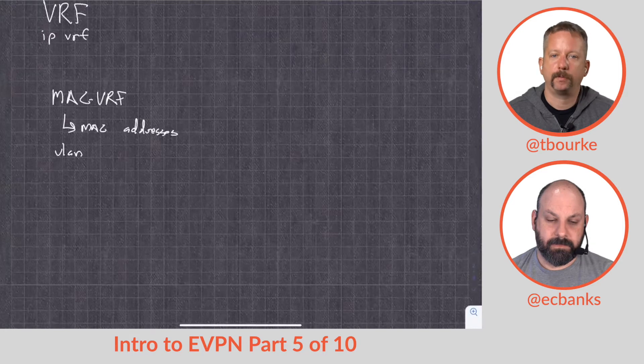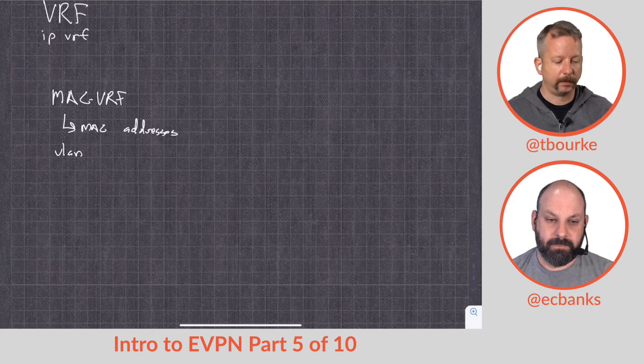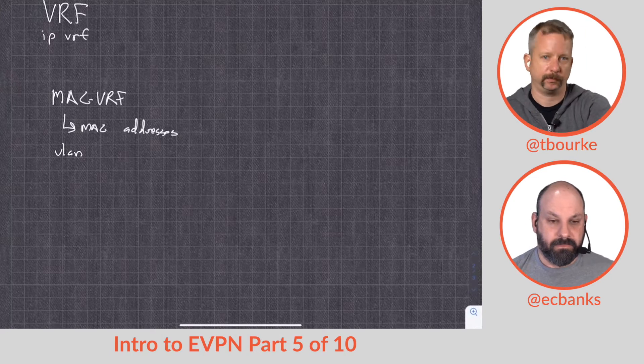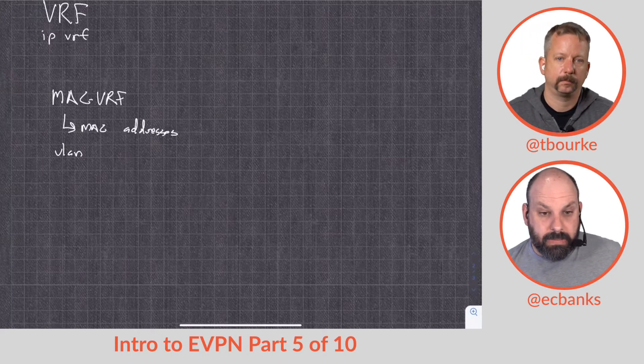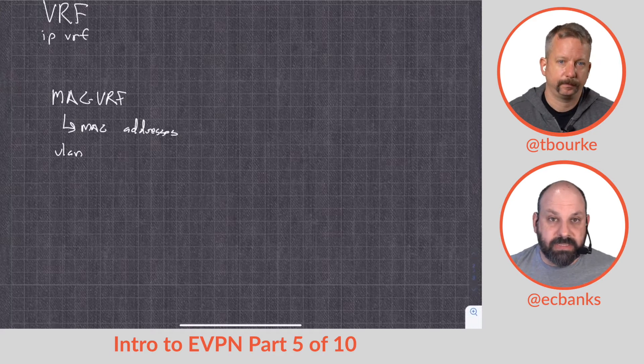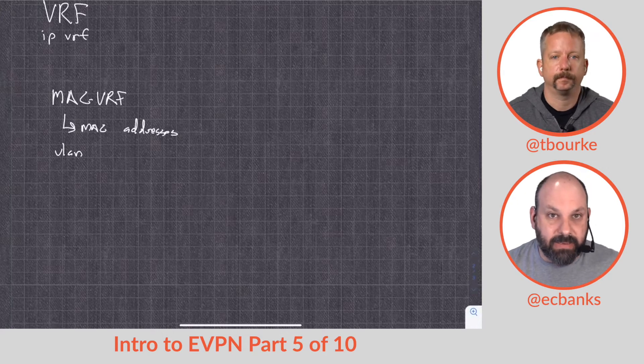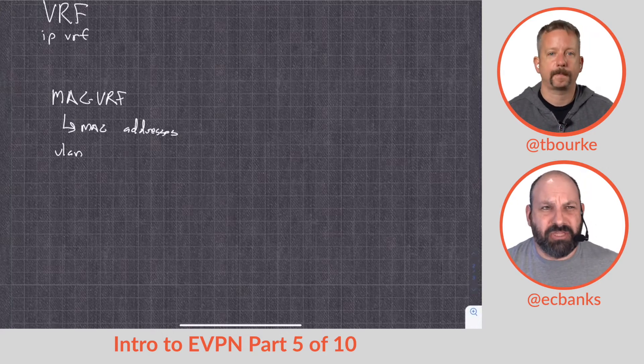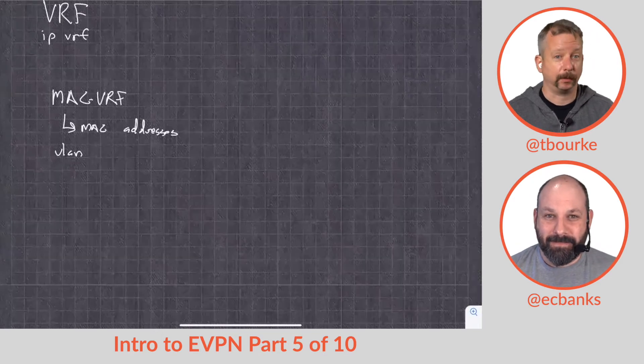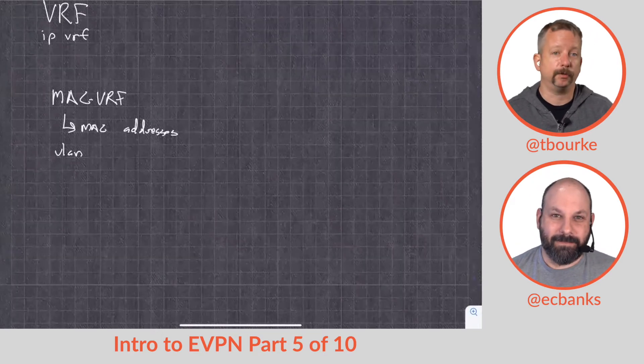How does layer 2 typically, how does one switch learn about the MAC addresses on another switch? How does MAC learning happen traditionally? Well, traditionally it's broadcast, flood and learn, unknown unicast flooding, that process. Yeah, for a minute I was like, wait a minute, they don't exchange MAC addresses between switches.